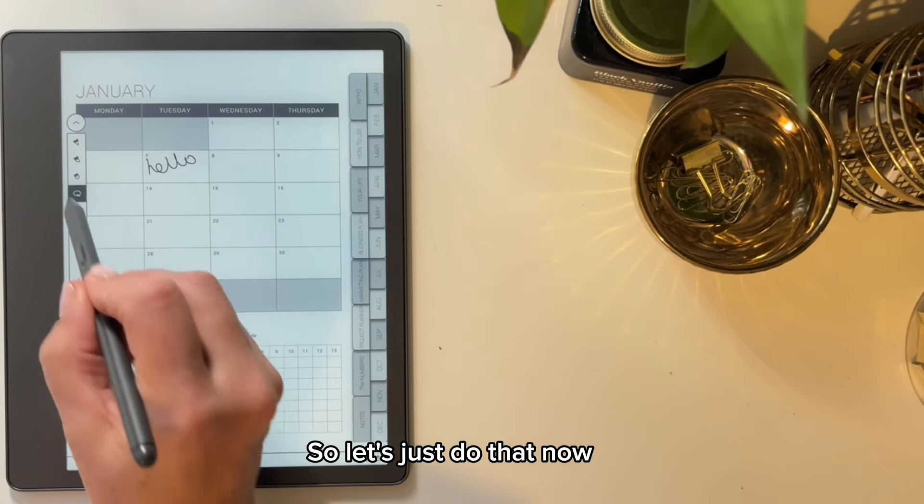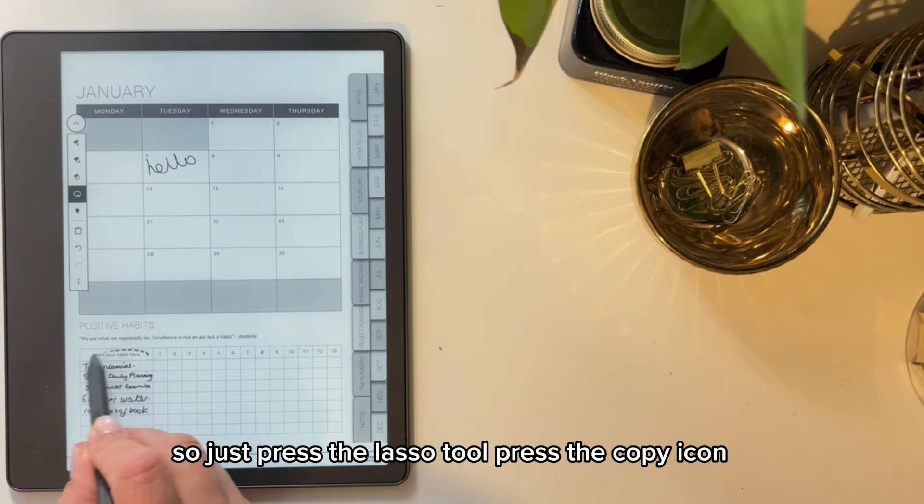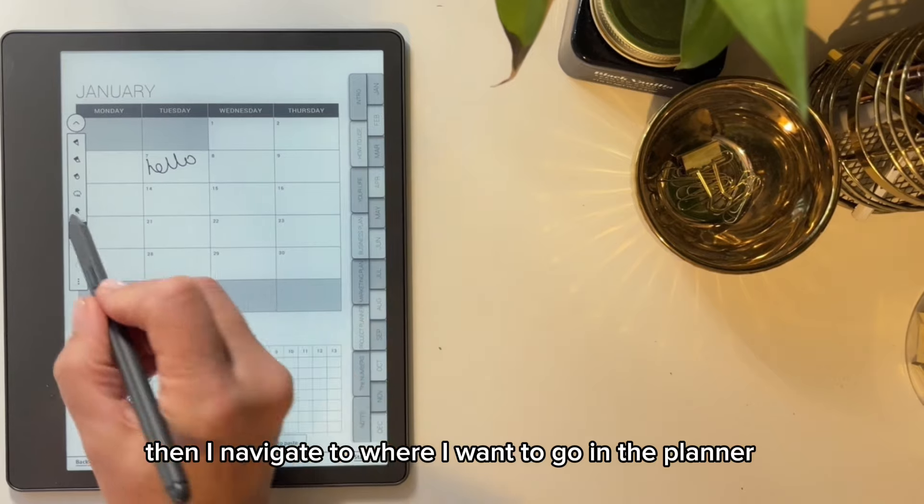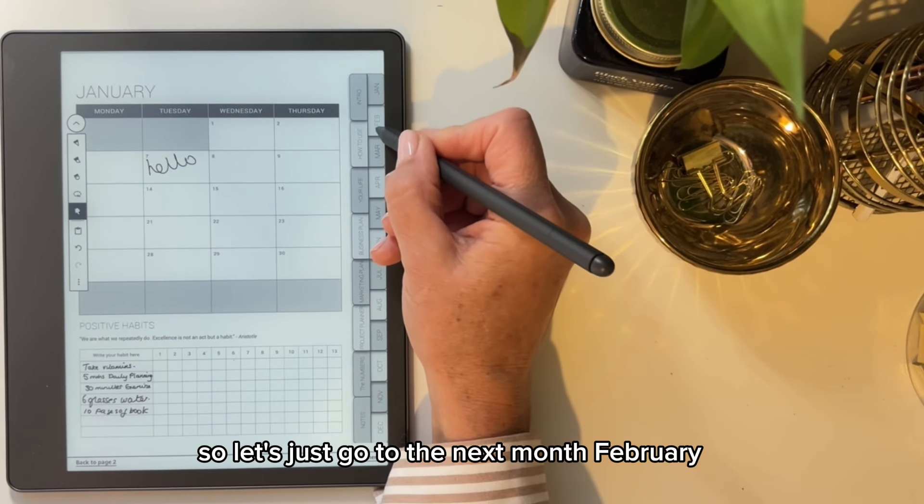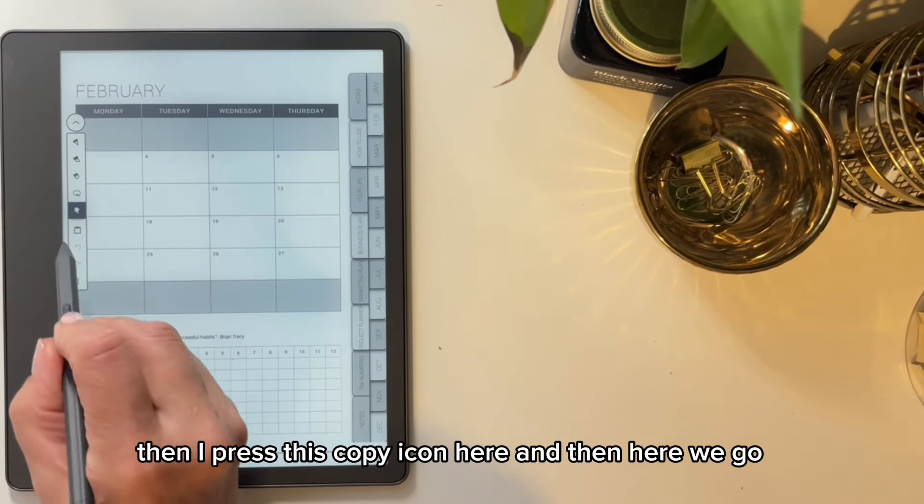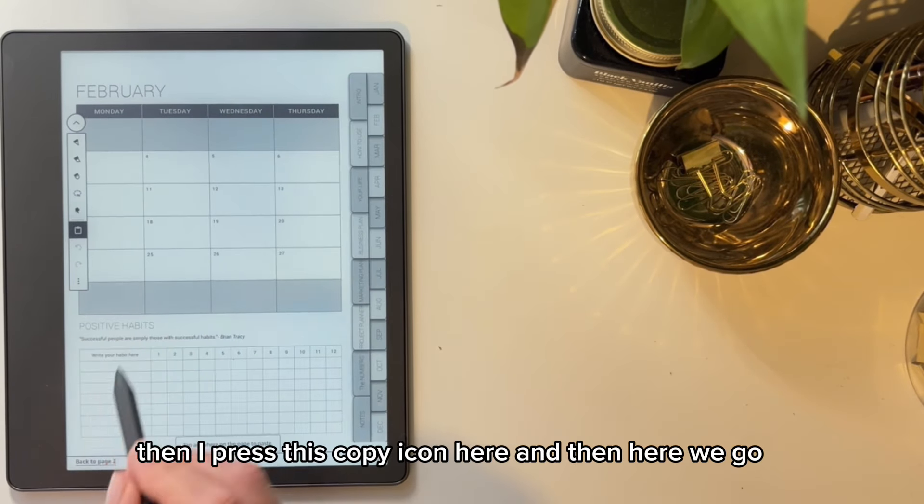So I just press the lasso tool, press the copy icon. Then I navigate to where I want to go in the planner. So let's just go to the next month, February. Then I press this copy icon here.